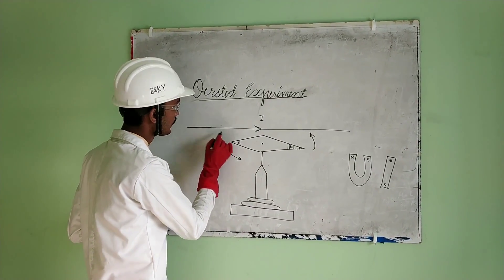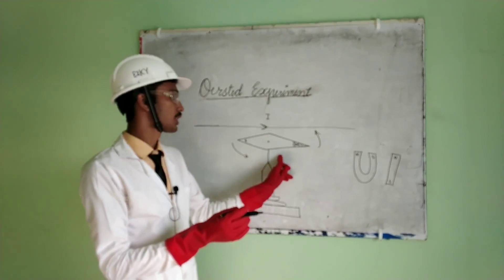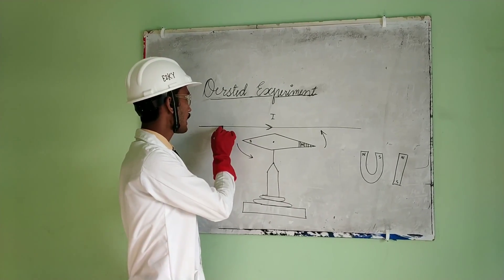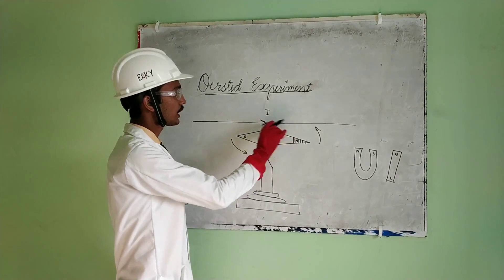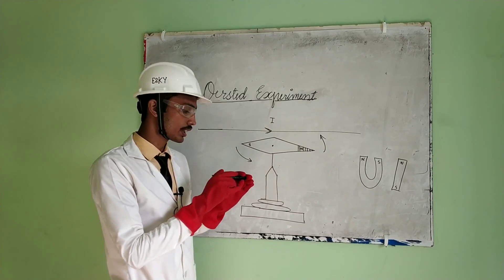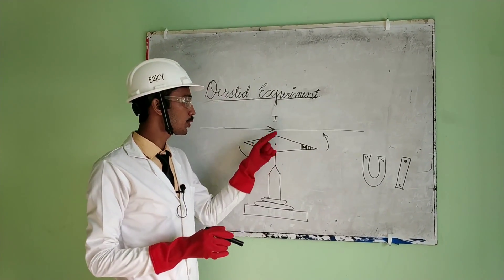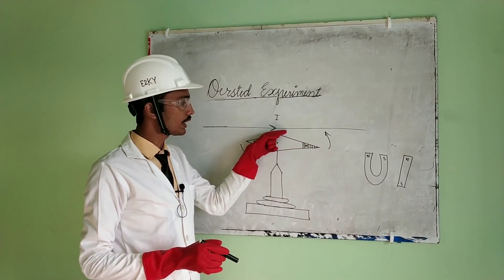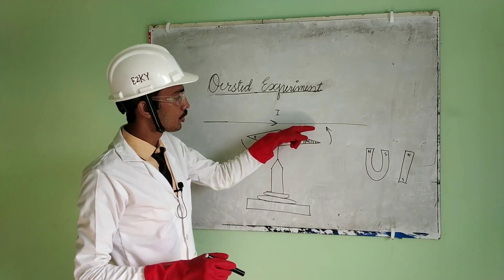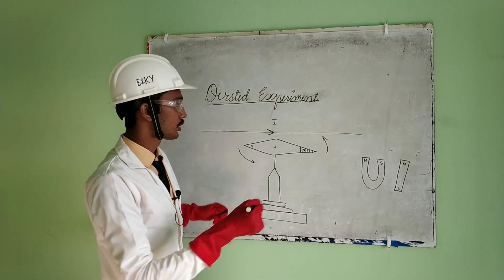There is a magnetic needle. It is the current-carrying wire that causes the magnetic needle to deflect. This proves that the current-carrying conductor produces a magnetic field.